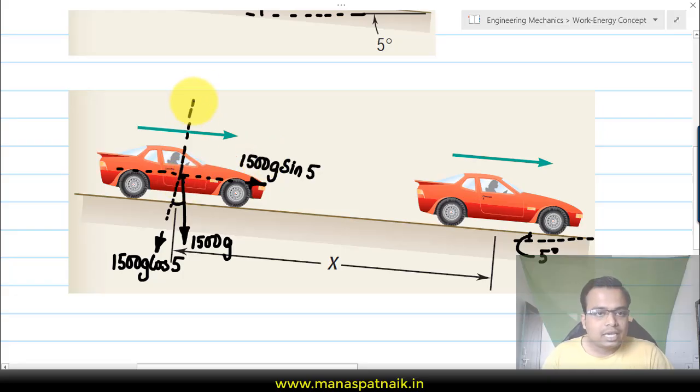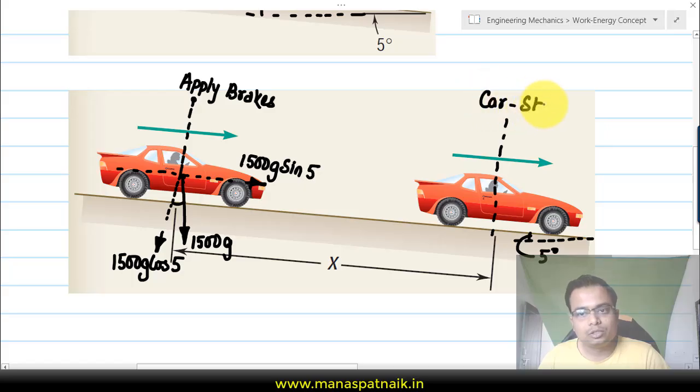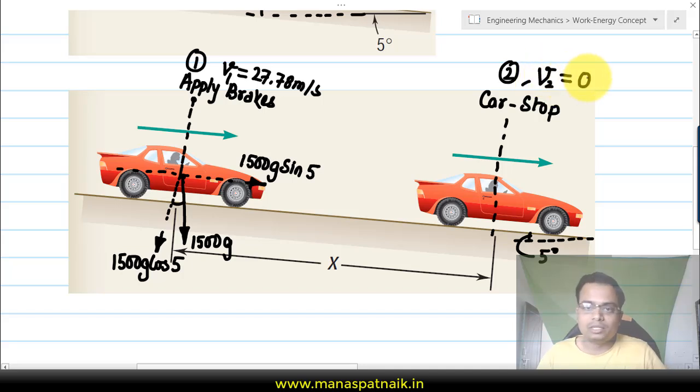Now this is exactly the moment when you apply brakes, and this over here is exactly the moment when the car eventually stops. Here you can say that you are moving with a velocity of 27.78 meters per second. Let's say this is position one, and you are moving with this velocity.